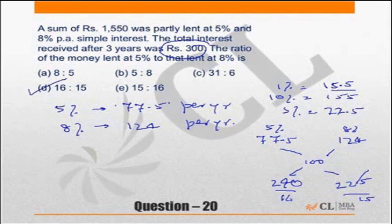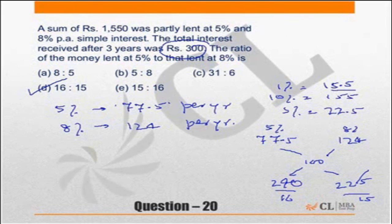Questions of allegation should be done using allegation. Other methods are not incorrect but they will be lengthy and time-consuming. Since 300/1550 was not an easy percentage, we worked on the actual amount of interest per year instead.